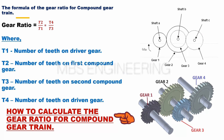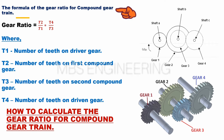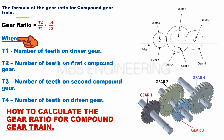Next, we understand how to calculate the gear ratio for a compound gear train and understand the formula. The gear ratio for a compound gear train equals T2 divided by T1, with that obtained value multiplied by T4 divided by T3.